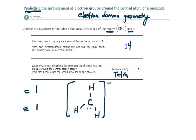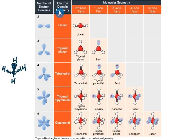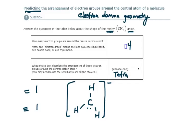In the next topic, we will move one step further and go from electron domain geometry to molecular geometry. But for right now, let's get a good grasp on determining electron domain geometry — and that includes not only lone pairs, but also bonded pairs of electrons.